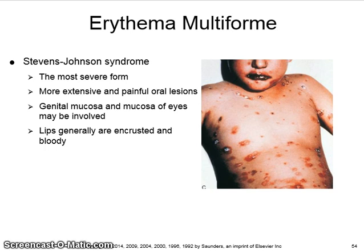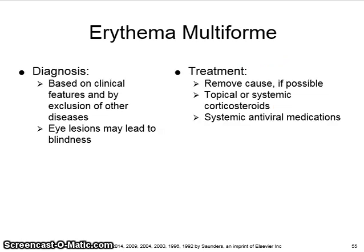Stevens-Johnson syndrome is the most severe form of erythema multiforme. It is more extensive and has more painful oral lesions. Genital mucosa and mucosa of the eyes may also be involved. The lips are generally encrusted and bloody.